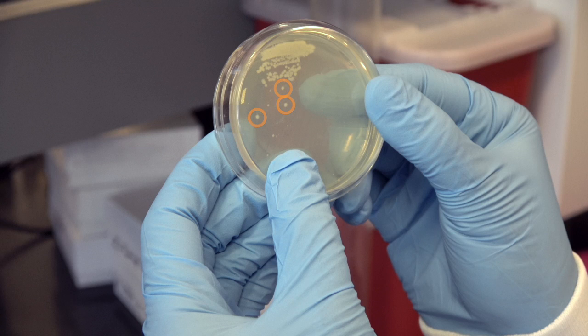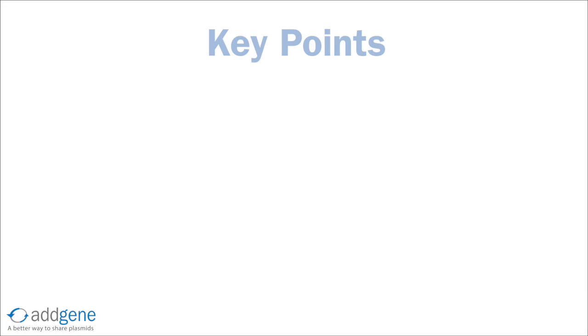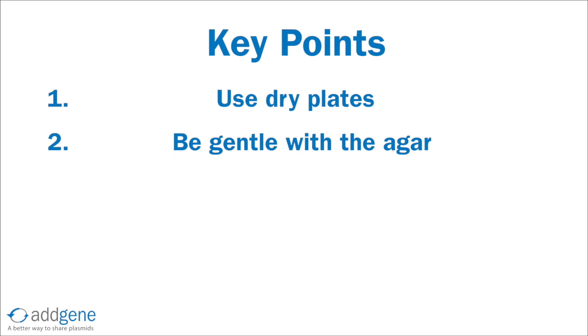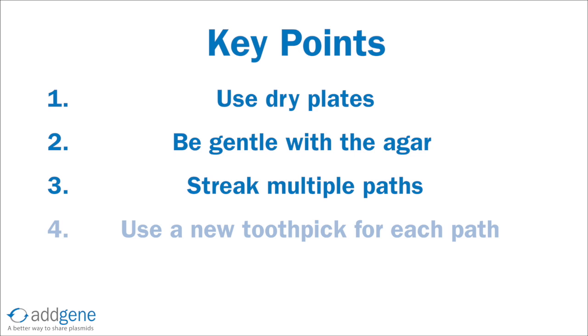For optimal bacterial streaks with single colonies, always remember these key points. Use dry plates. Be gentle with the agar. Streak multiple paths. Use a new toothpick or sterilize your loop so that each path is fresh. And perform all work near a flame.